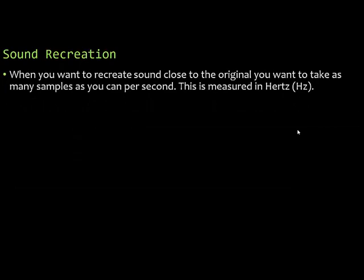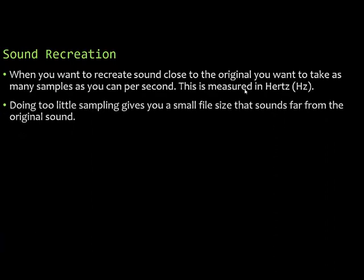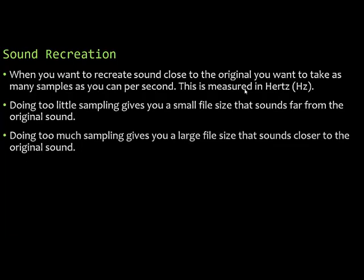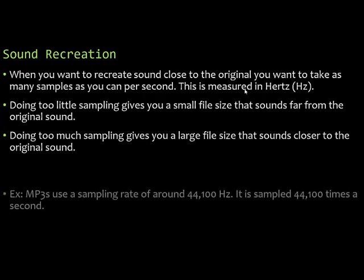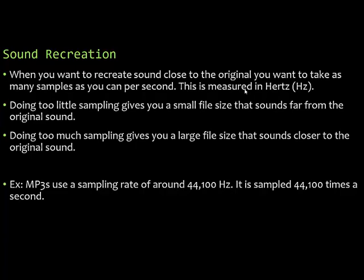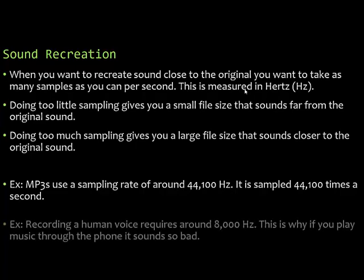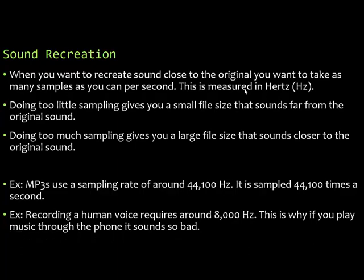To recreate sound close to the original, you take as many samples as possible per second, measured in hertz. Too little sampling gives a small file size that sounds far from the original; too much gives a large file size that sounds close to the original — there's a trade-off. MP3s use a sampling rate of around 44,100 hertz, sampled 44,100 times per second. Recording a human voice requires around 8,000 hertz — the rate used by phones — which is why music played over a phone sounds poor, as it's downgraded from 44,100 to 8,000 hertz.